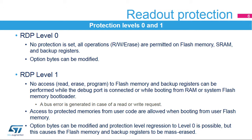In Level 1, read protection is set for the flash memory and the backup registers. In this level, protected memories are only accessible when booting from user flash memory. Whenever a debugger access is detected or boot is not set to a user flash memory area, any access to the protected memories generates a system hard fault which blocks all code execution until the next power-on reset. Note that option bytes can still be modified in this level, making it possible to remove the protection.